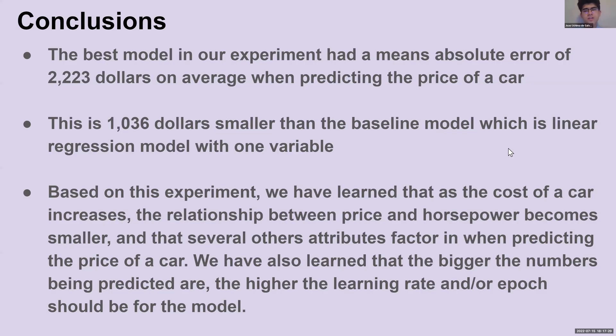For our conclusion, the best model, which was deep neural network with multiple variables, got an MAE of 2,223 on average when predicting the price of a car. And that was $1,036 smaller than the MAE of the baseline model, which was a linear regression model with one variable.